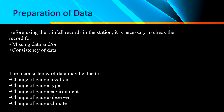Preparation of data. Before using the rainfall records in the station, it is necessary to check the record for missing data and the consistency of data — whether there is missing or inconsistent data. The inconsistency of data can be due to the change of gauge location, change of gauge type, change of gauge environment, change of gauge observer, and change of climate.